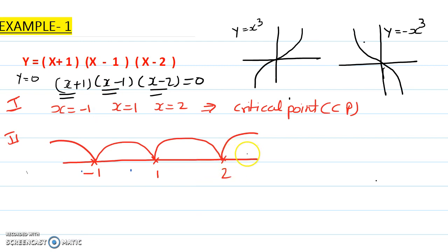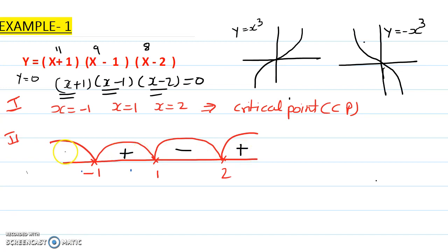Take any number greater than 2 — I always take 10. Putting x=10: 10+1=11, 10-1=9, and 10-2=8. Multiplying 11×9×8 gives a positive result. From there, just follow alternating signs blindly: plus, minus, plus, minus. In 90% of cases you follow blindly; the other 10% you need to check every single gap in the bridge shape diagram — I will show you when in the next example.